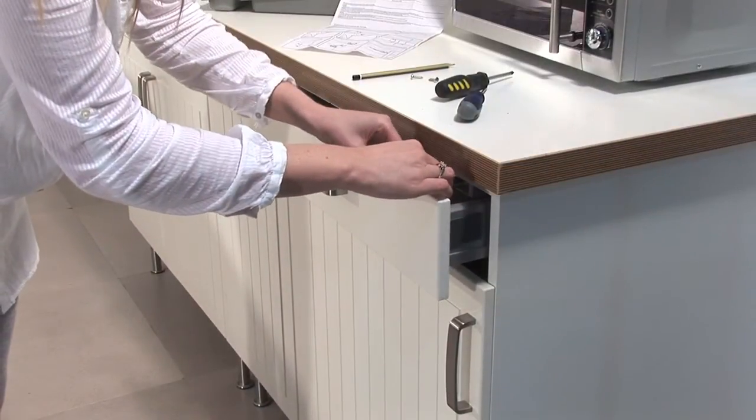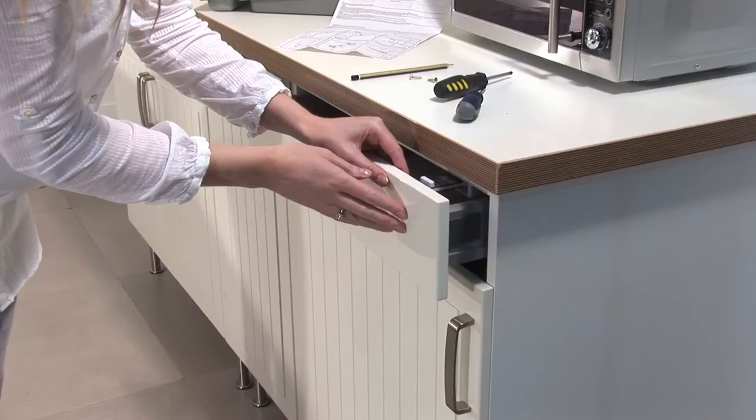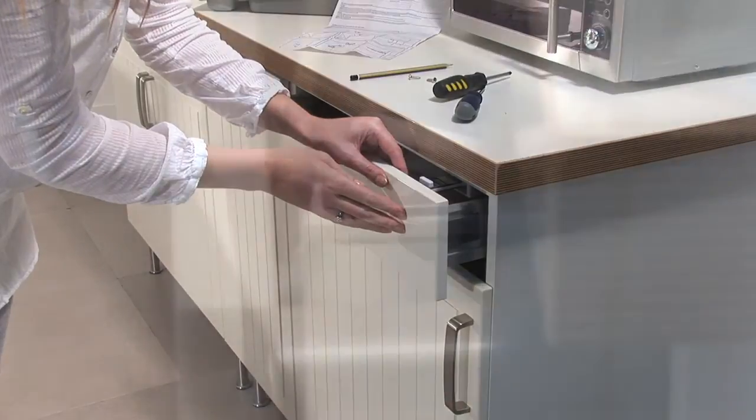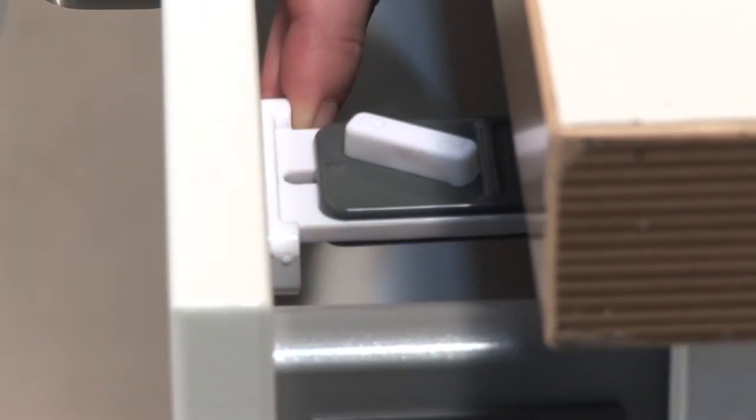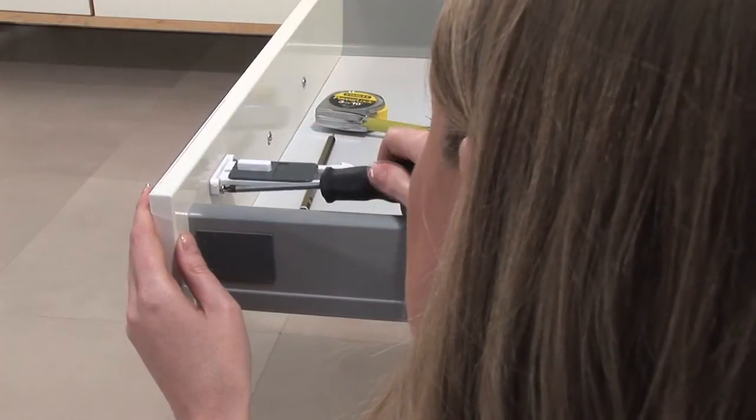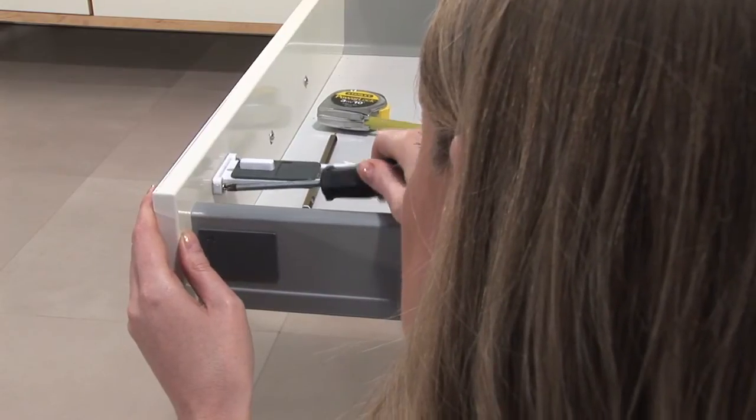Hold the base of the latch to the cupboard drawer and align it centrally to the catch. Ensure the position allows the latch to pass through the catch. Mark the position of the screw holes and mount the latch using the screws provided.